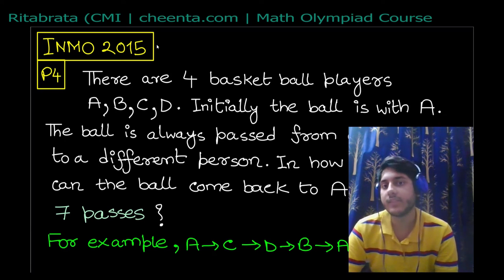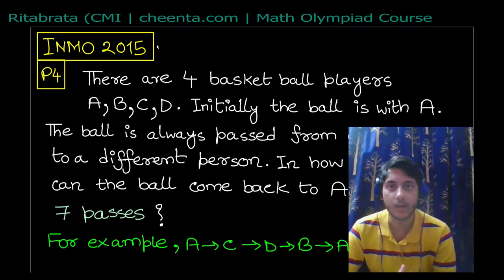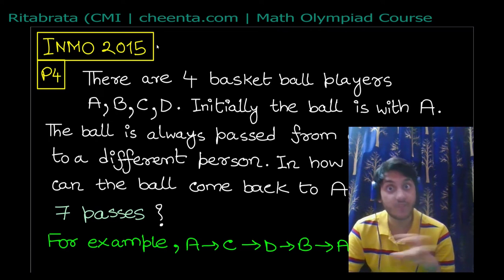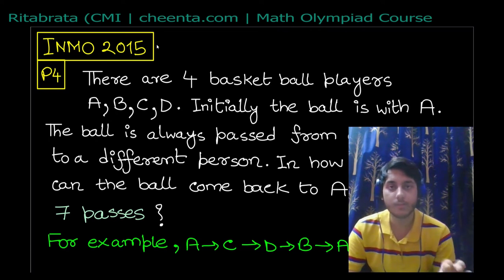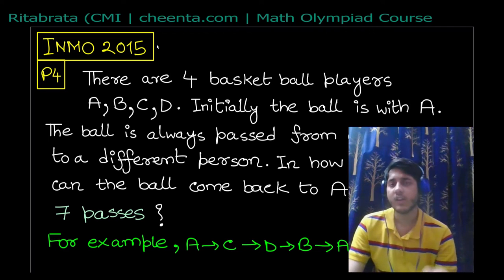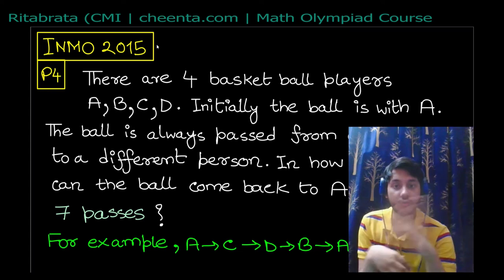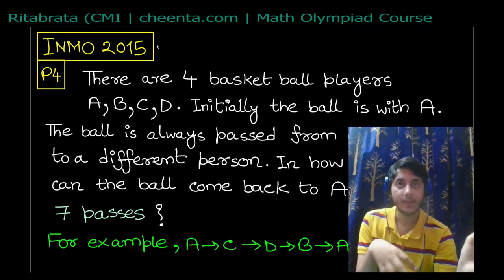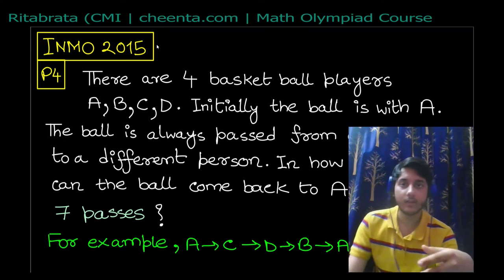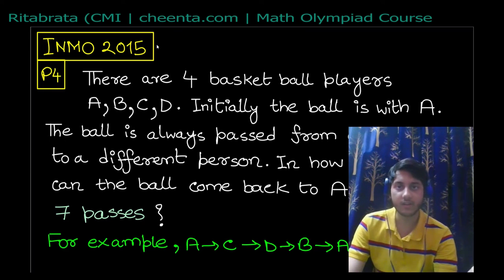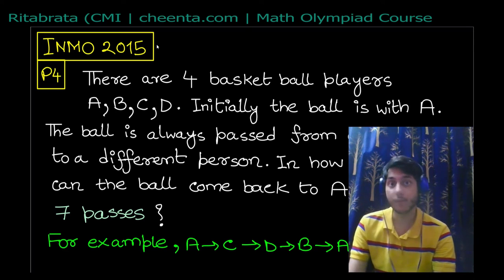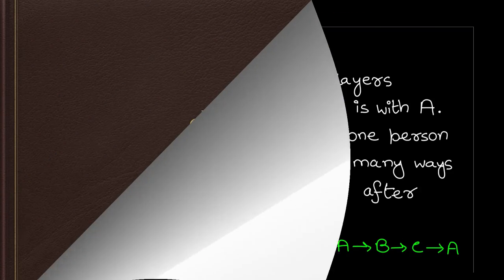The problem says there are four basketball players A, B, C, and D. The ball is initially with A, and the ball can always be passed from one person to a different person. The question asks: in how many ways can the ball come back to A after exactly seven passes? For example, A throws to C, C throws to D, D throws to B, B throws to A, A throws to B, B throws to C, and C throws back to A — this is a valid seven-throw sequence. How many such distinct seven-throw sequences are possible?